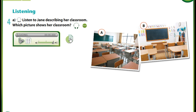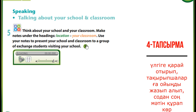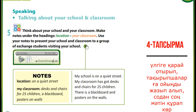My classroom has got desks and chairs for all the students. There is a blackboard, but there is not a television or projector. There are no posters on the wall and there is not a bookcase. All our books are in the school library. For task number four, I would like you to write about your school and classroom as in this example.